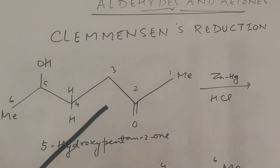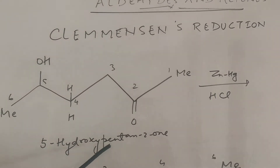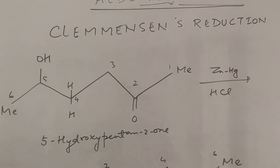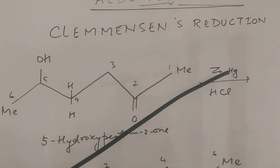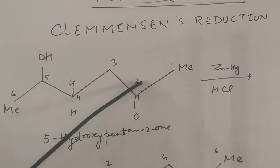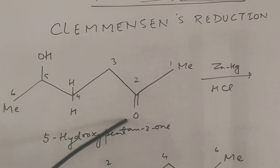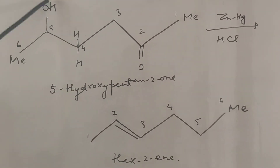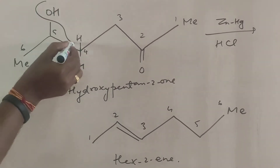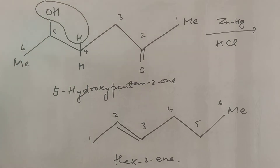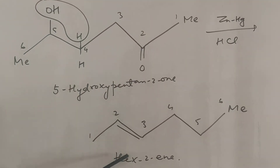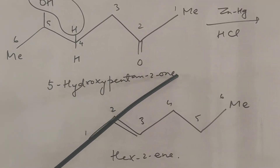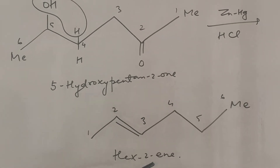Suppose we have 5-hydroxypentane-2-one. During Clemmensen reduction, the ketone is reduced to alkane and simultaneously dehydration happens, releasing one molecule of water. So a double bond forms, and 5-hydroxypentane-2-one forms pent-2-ene.